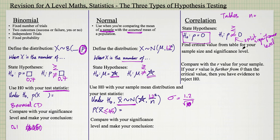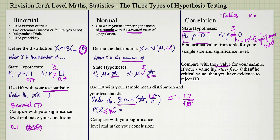You find the critical value from the table, then compare it with the r value from your sample — either given in the question or calculated earlier. Remember, rho represents the underlying population. For example, if your sample is 10 days of rainfall and hours of sunshine, the r value tells you whether there's correlation in your sample, while this test tells you whether there's any underlying correlation in the populations of rainfall and hours of sunshine.